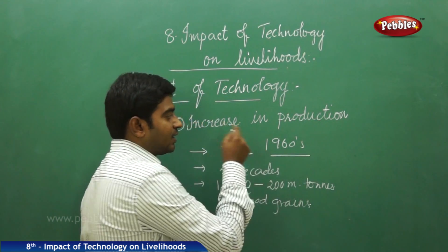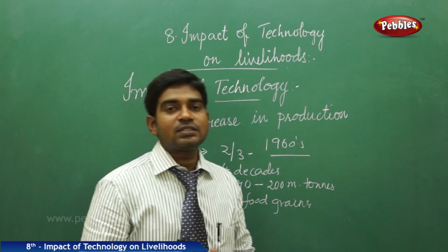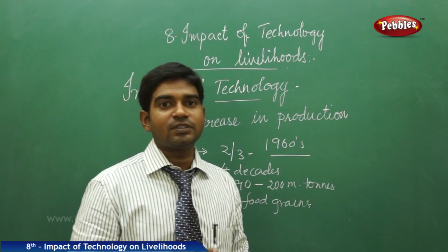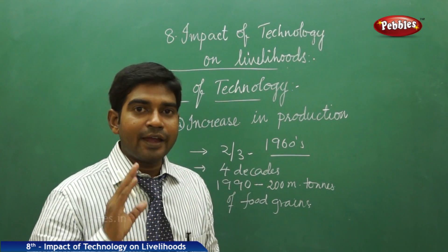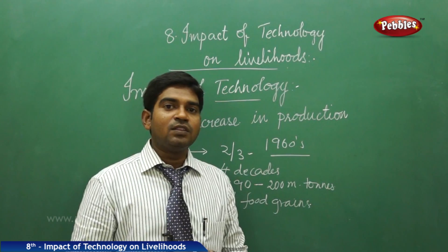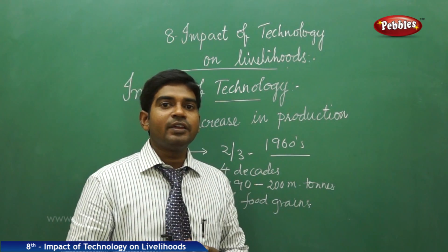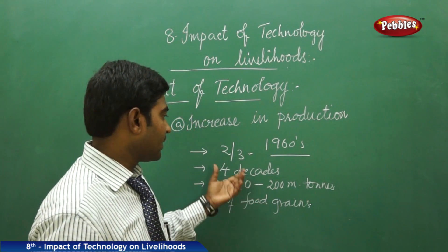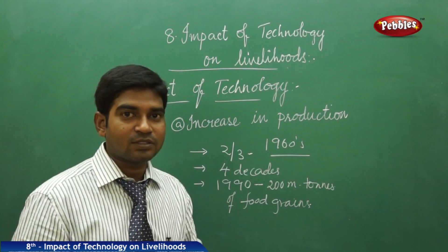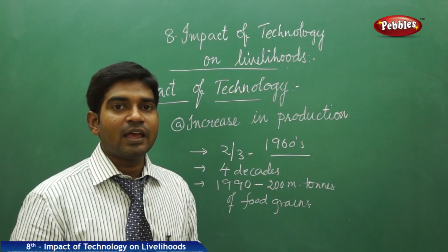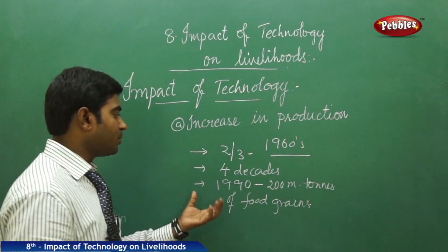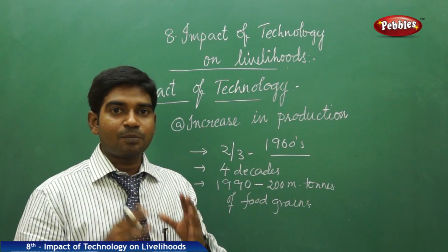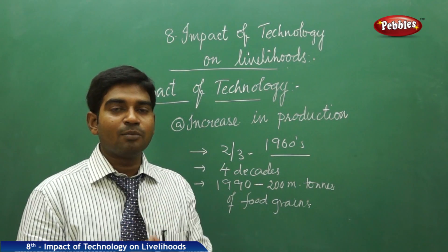This period was crucial because it marked the beginning of the Green Revolution, which brought high-yielding variety seeds, better fertilizers, and good water supply through irrigation projects. These ensured India gained a very good advantage. Over four decades, by the late 1990s and early 21st century, India was able to produce nearly 200 million tons of food grains, standing at number one in food grain production.